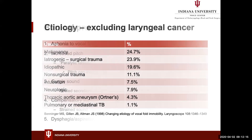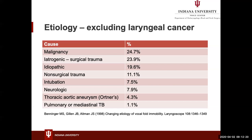The most common cause of unilateral vocal fold paralysis is malignancy or malignancy-related. A fair amount are caused iatrogenically by surgical trauma, a fair amount are idiopathic where we never find the cause, and then there are various other causes.